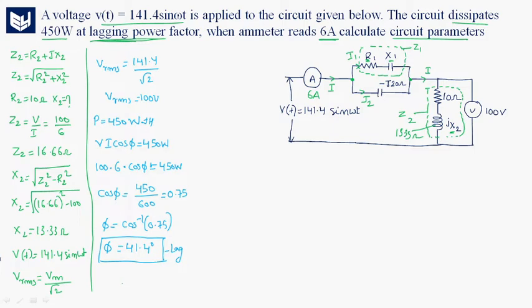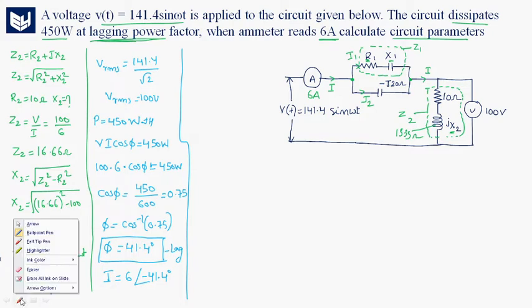Since the power factor is lagging, the current I = 6∠−41.4°. Now we will find the voltage across Z2.